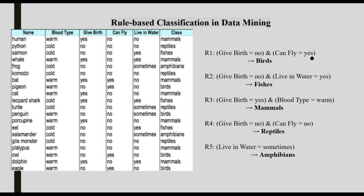Now the rules are listed. Rule: give birth = no, can fly = yes → belongs to bird. Give birth = no, live in water = yes → fishes. Give birth = yes and blood type = warm → mammals. Give birth = no, can fly = no → reptiles. Give birth = no, can fly = no, live in water = sometimes → amphibians.